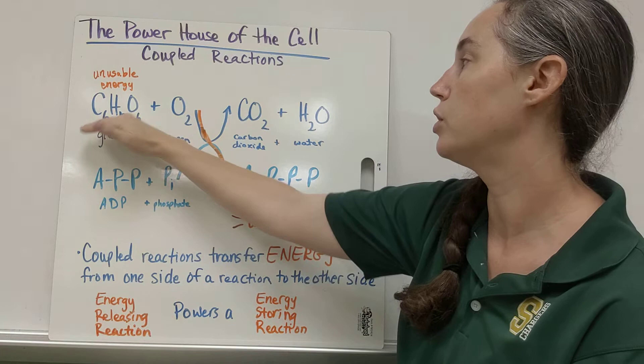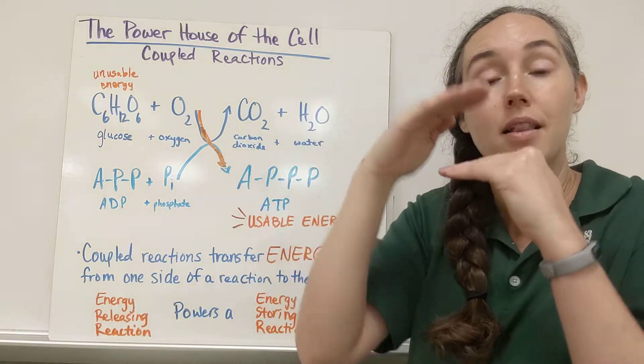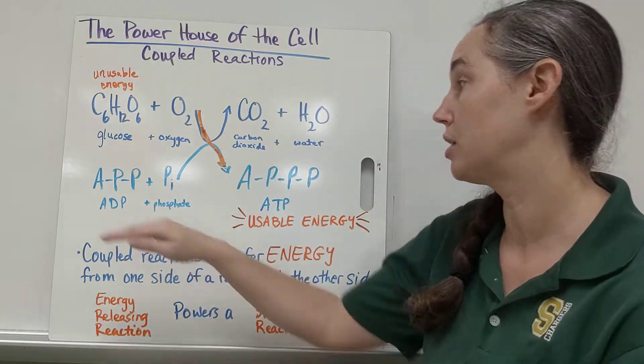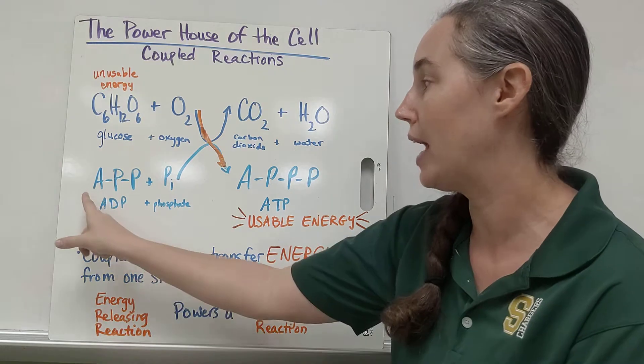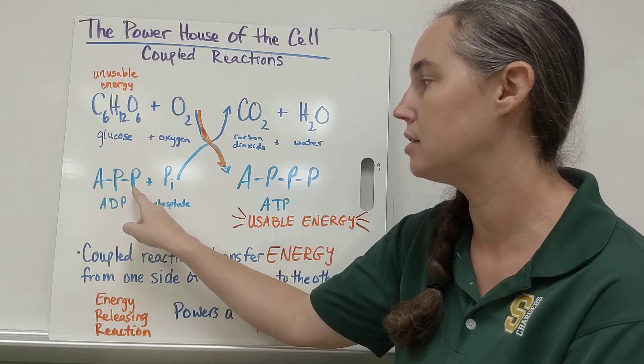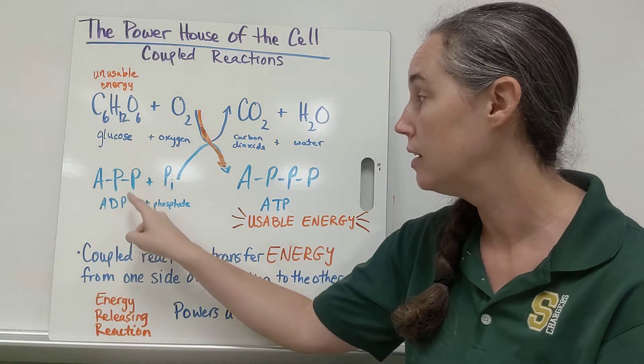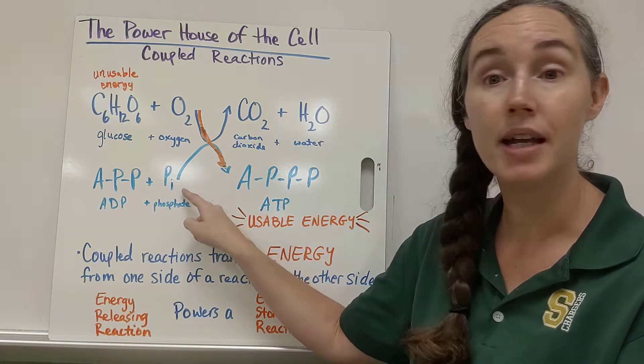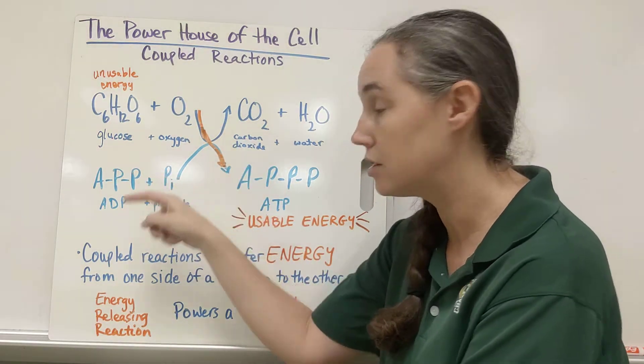So you can see these two reactions. In the one up here, I've got glucose plus oxygen yield CO2 and water. And then in a parallel reaction, I have ADP or adenosine diphosphate. So A is for adenosine and these Ps are each phosphates, so adenosine diphosphate means this one has two, plus one inorganic phosphate.